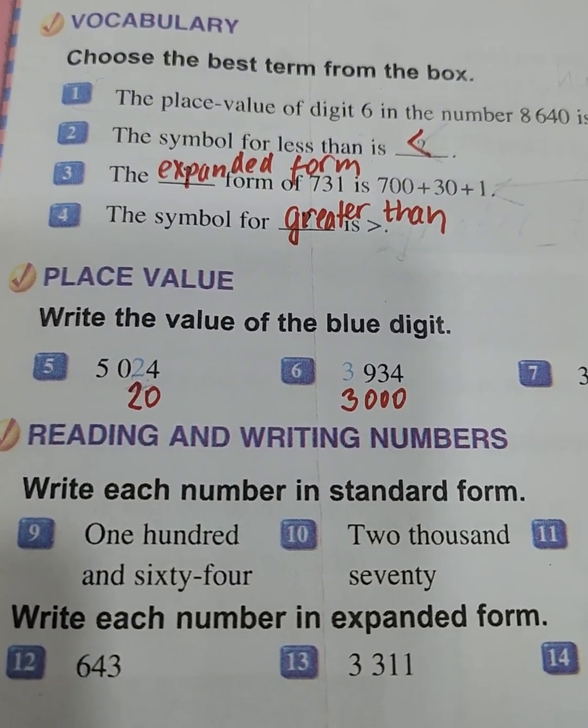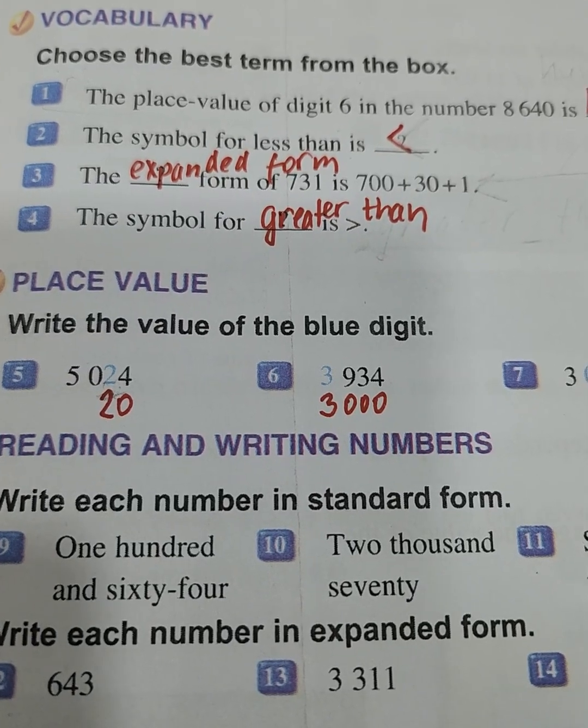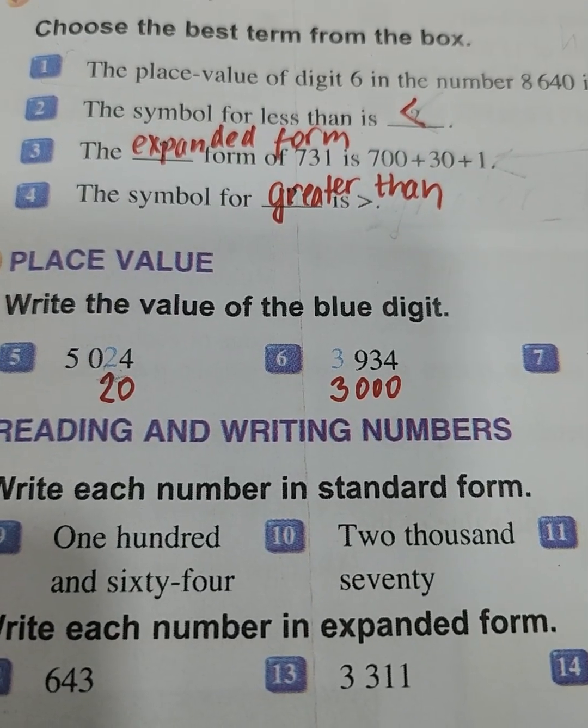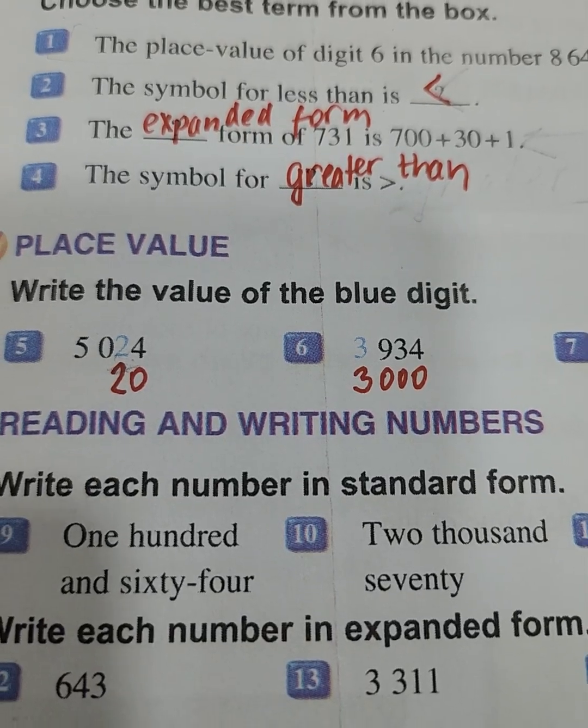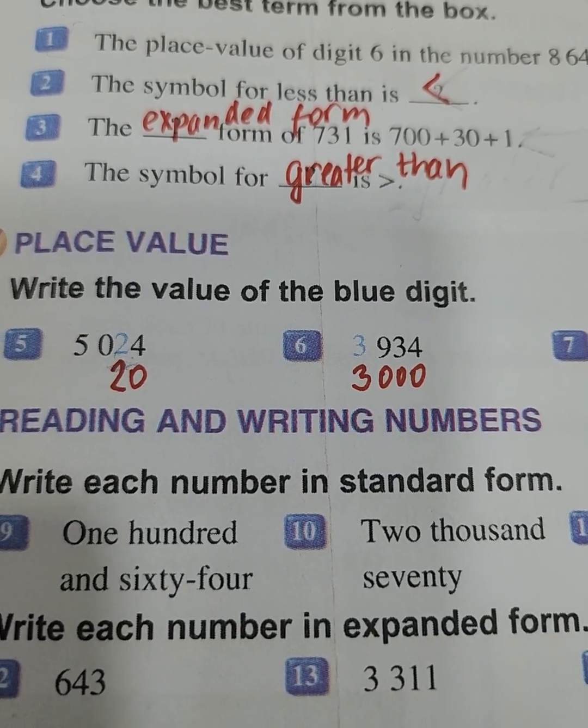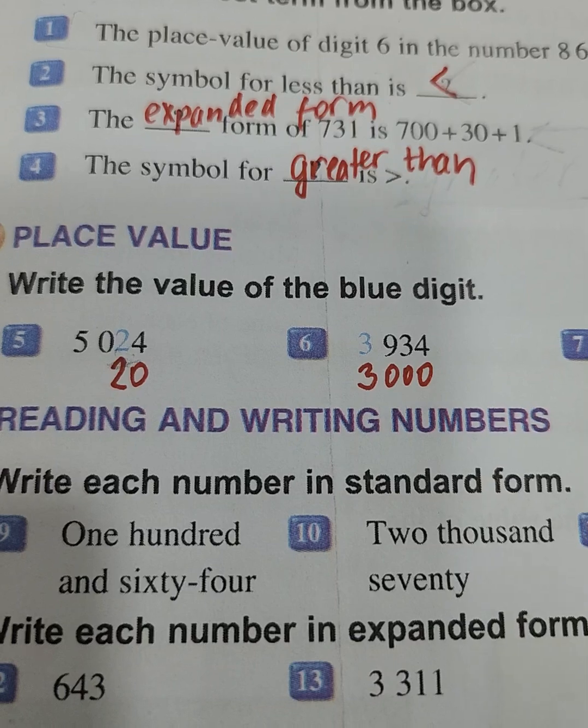The expanded form of 731 is 700 plus 30 plus 1, and the symbol for greater than is this. After, we must write the place value of the blue digit. The value of the blue digit in 5024 is 20, so we are on the tens place.